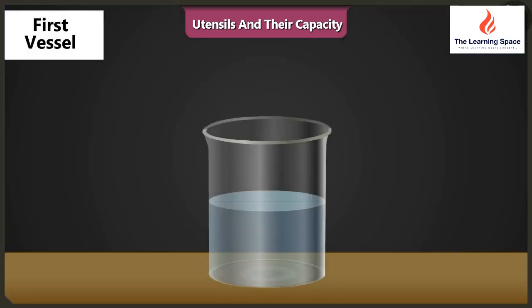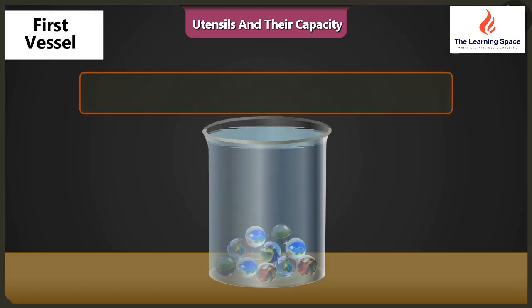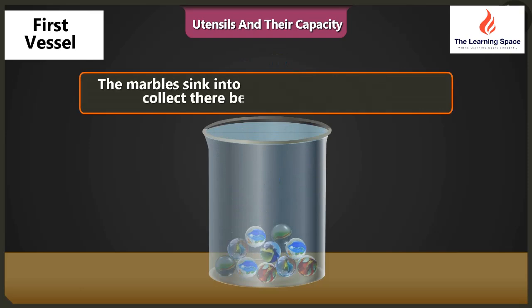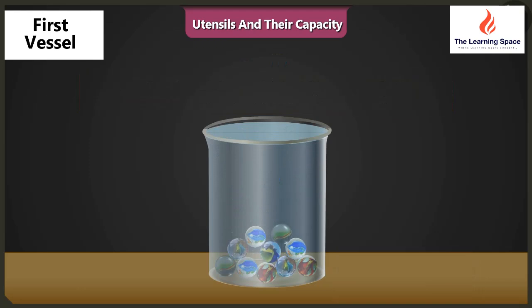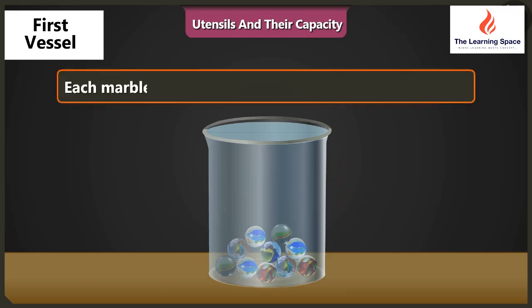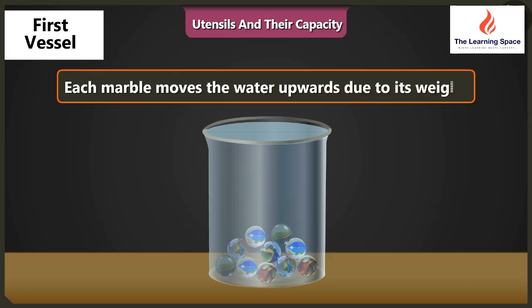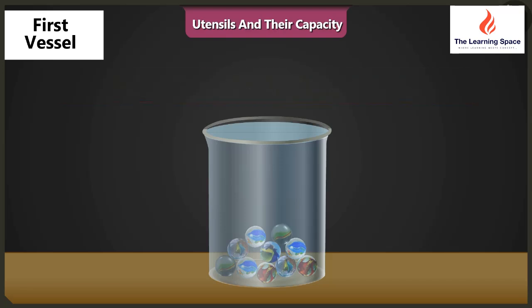Mishtu, when we drop the marbles in a vessel half filled with water, the marbles sink to the bottom of the vessel and get collected there due to their weight, and as a result the water comes up. When marbles are dropped in the water, each marble moves the water upwards due to its weight, and that brings the water upwards so the water level rises.